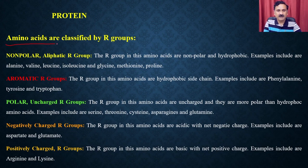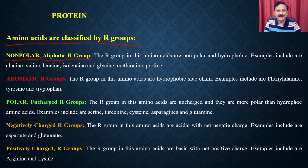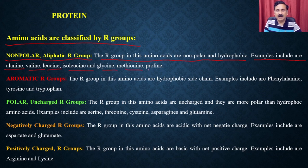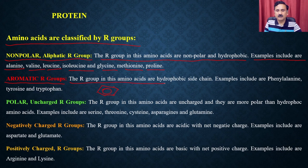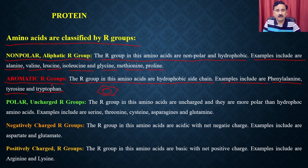Amino acids are classified by the R groups. Non-polar aliphatic R groups are non-polar and hydrophobic; examples include alanine, valine, leucine, isoleucine, glycine, methionine, and proline — these have linear chains. Aromatic R groups contain a benzene ring and are hydrophobic; examples include phenylalanine, tyrosine, and tryptophan. You need to remember the structures of these amino acids to understand the functional role they play.